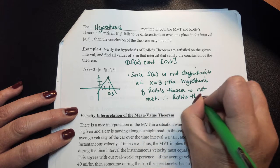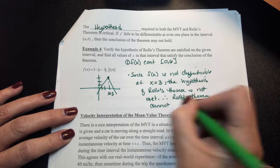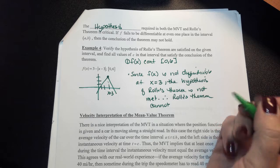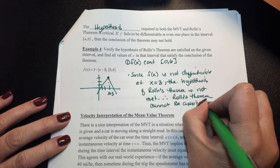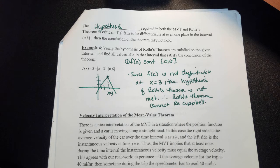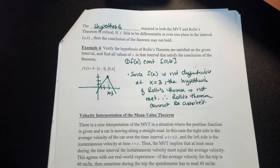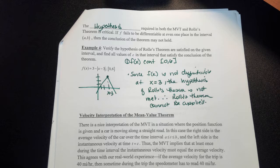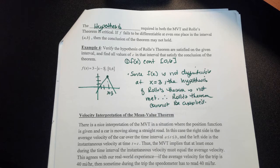All it takes is one place for it not to be differentiable or not continuous for your theorem to fail. Always just make sure that the hypothesis is met before you're applying Rolle's or the mean value theorem. Any questions on why we cannot apply Rolle's theorem to this particular example? Again, because 3 is in that interval 0 to 6, you cannot apply it.